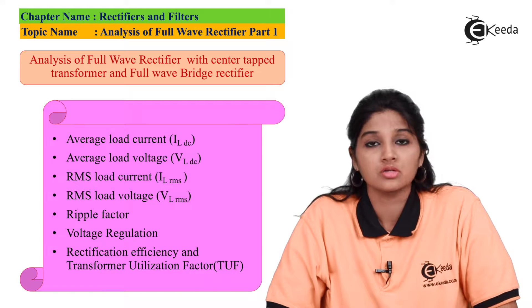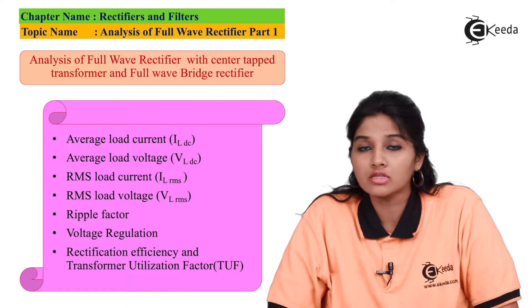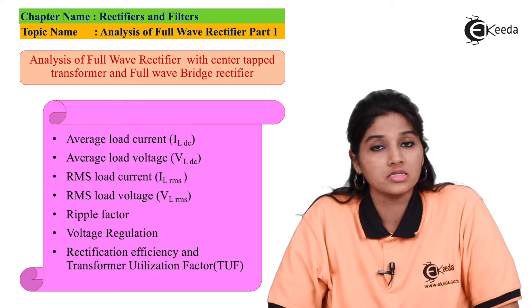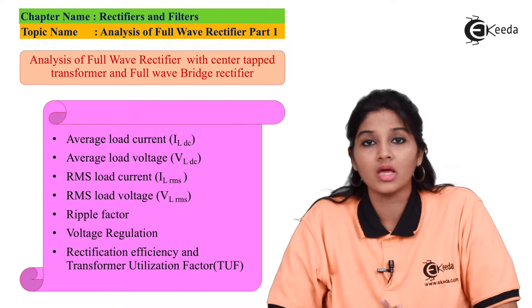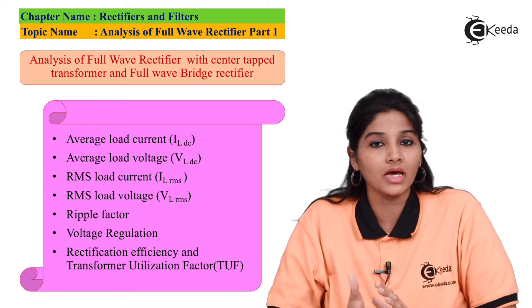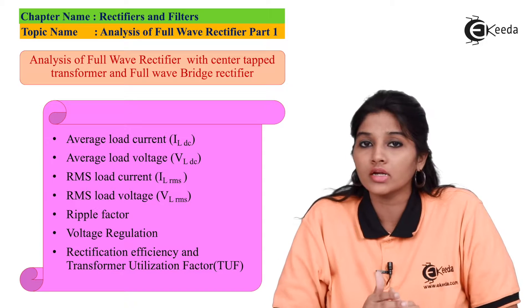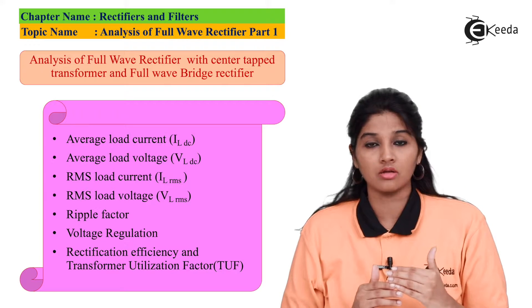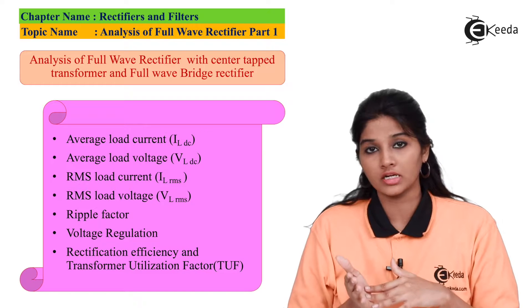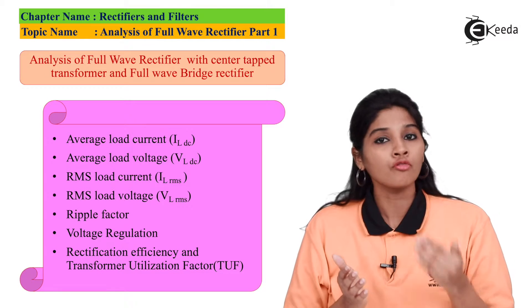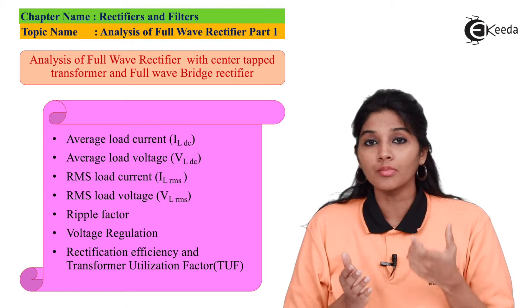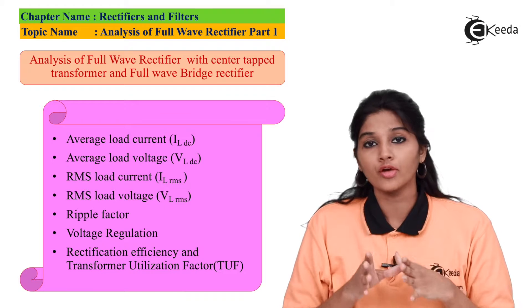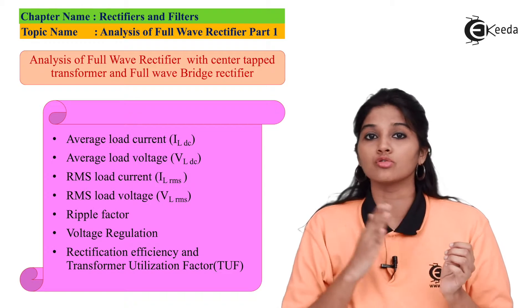The first parameter for analysis of full wave rectifier is DC or average load current, that is ILDC. Any periodic function's average value is the area covered by that function in one cycle. In case of full wave rectifier, we get output in both the half cycles — positive as well as negative. Therefore, the output waveform's complete cycle is from 0 to pi, and the cycle repeats itself after every pi interval. So we are going to consider the area from 0 to pi.